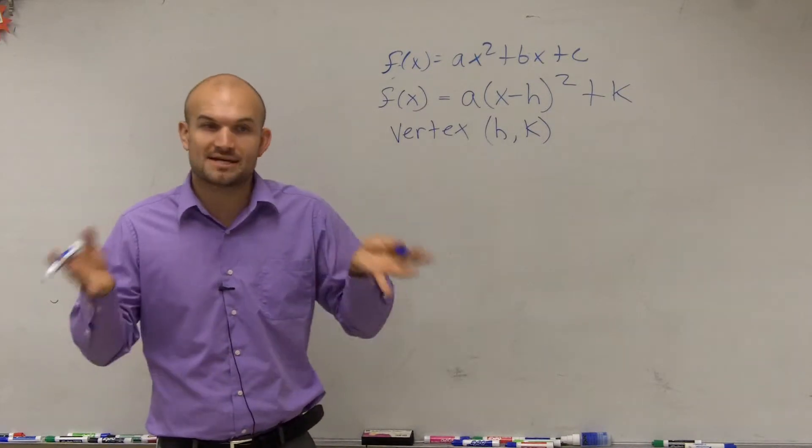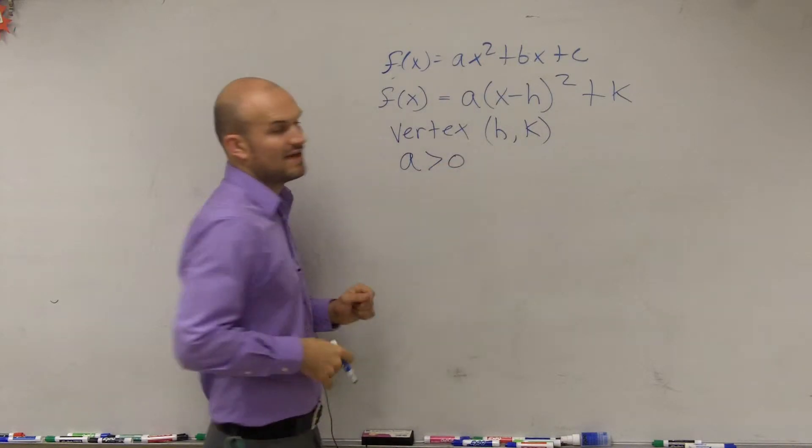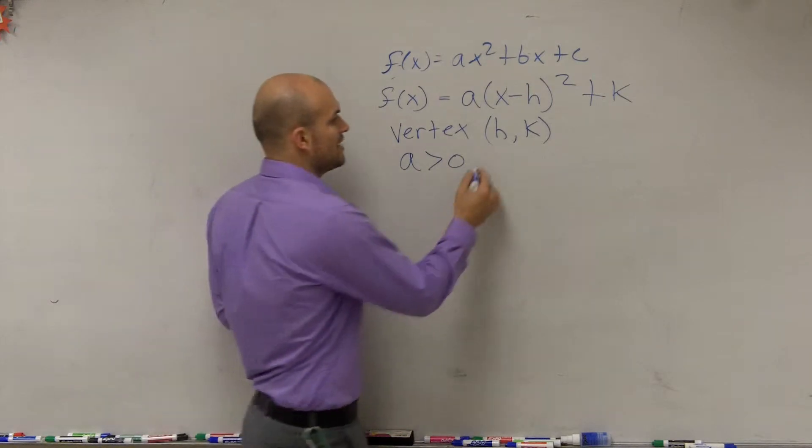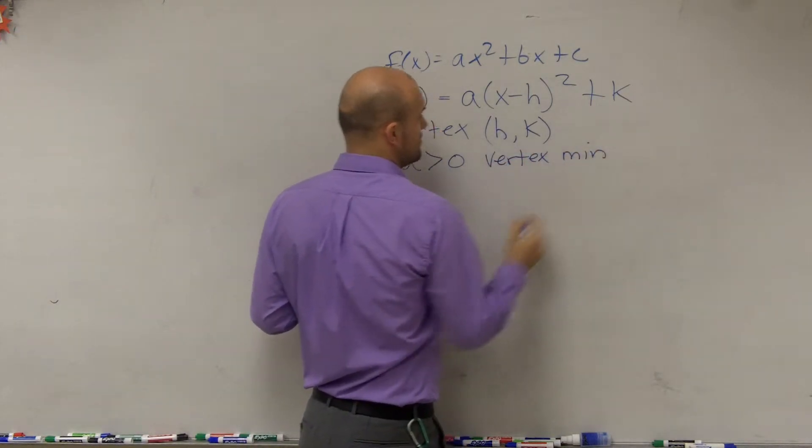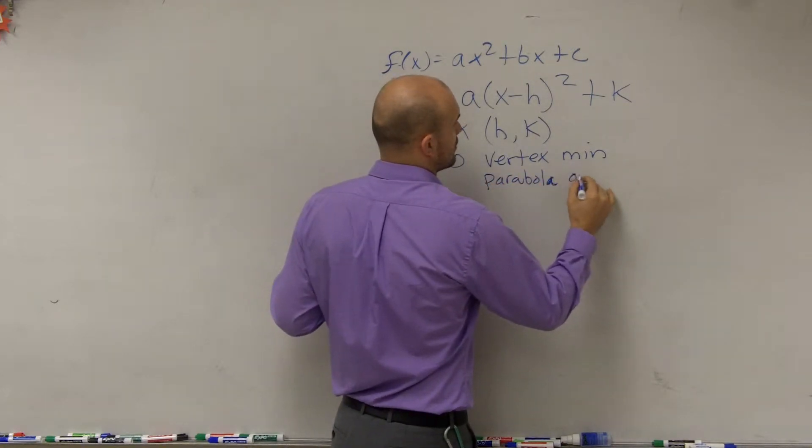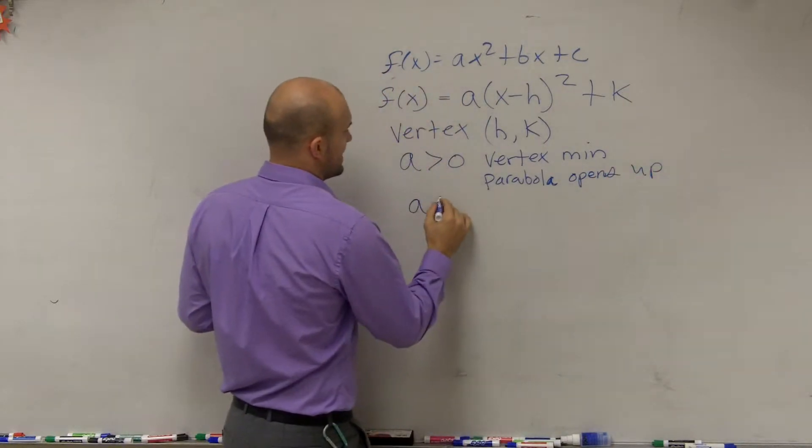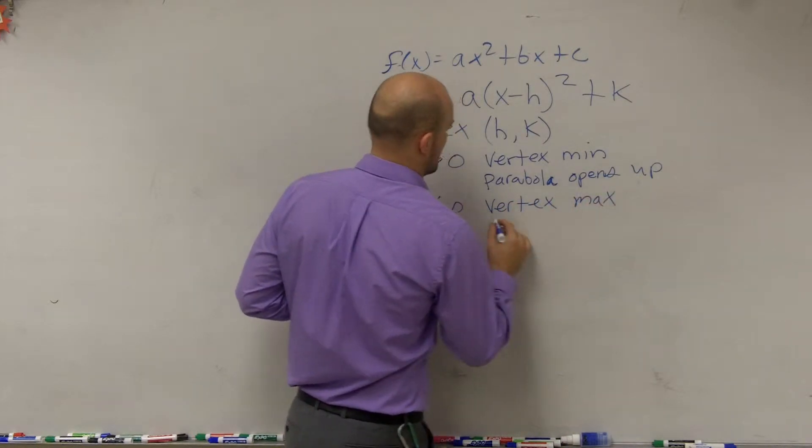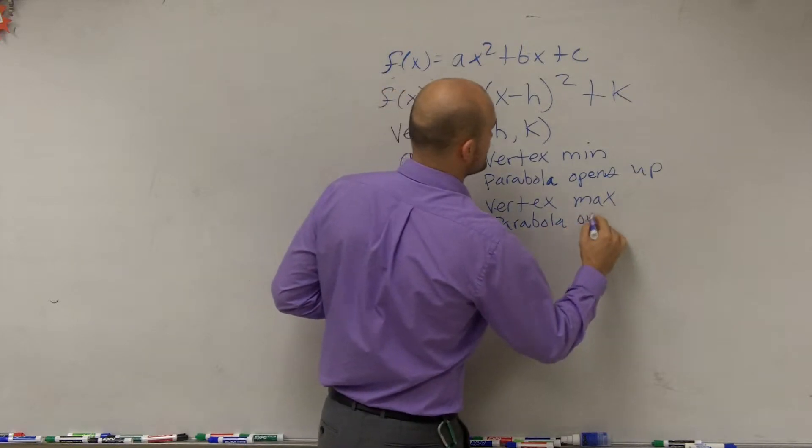The next thing is, is your vertex going to be maximum or minimum? Well, ladies and gentlemen, that's going to be the same thing. If a is greater than zero, that means you're going to be positive. Your vertex is going to be a minimum, and your parabola opens up. And if a is less than zero, your vertex is a max, and your parabola opens down.